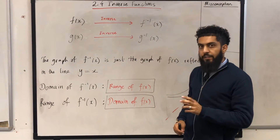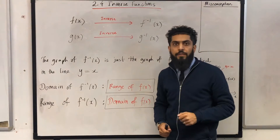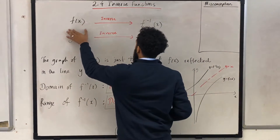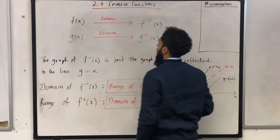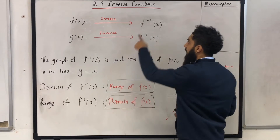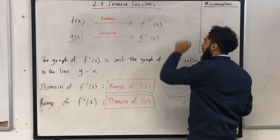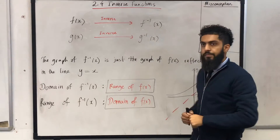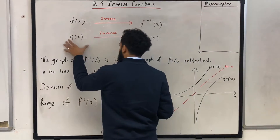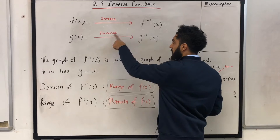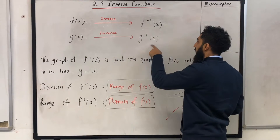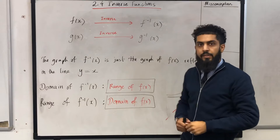Let's first focus on the notation of the inverse function. If I have a function f of x, the inverse function has the notation f to the power minus 1 in bracket x. In the same way, if I have the function g of x, the inverse function has the notation g to the power minus 1 in bracket x.